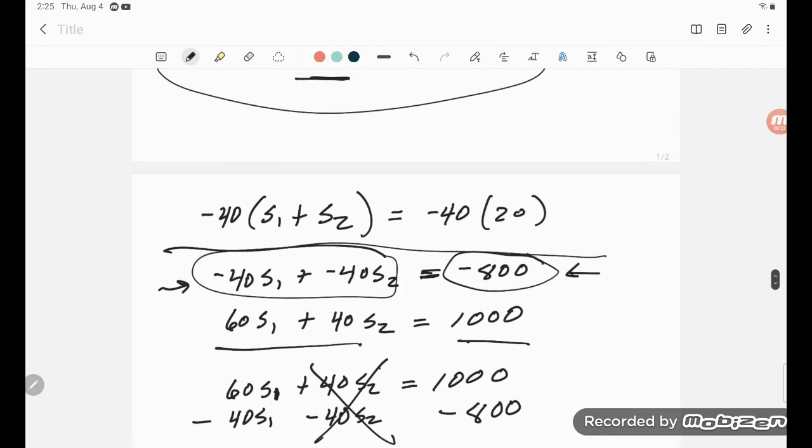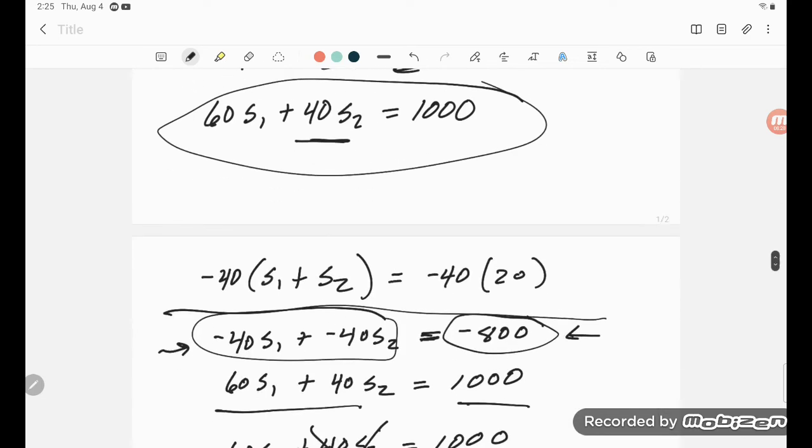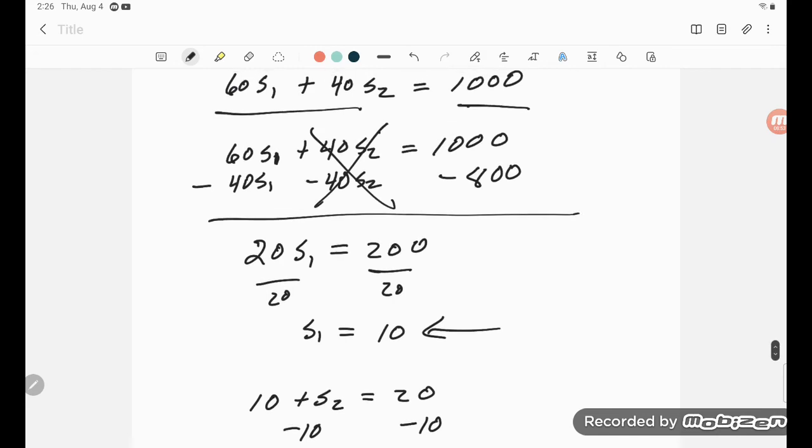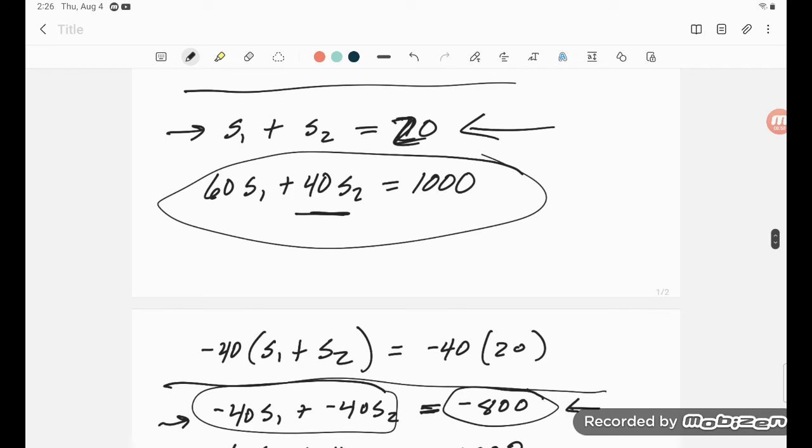But then, going back to any one of these equations, this one would be the easiest. If S1 is 10, that says 10 plus S2 is equal to 20. Subtract 10 from both sides, and I get S2 is equal to 10. So S1 is 10, S2 is 10. And that's another way to solve two equations, two unknowns.